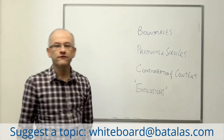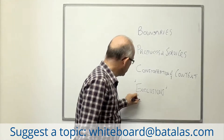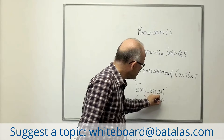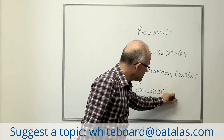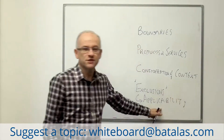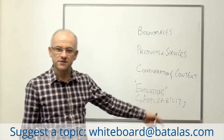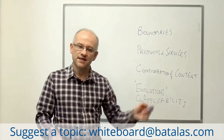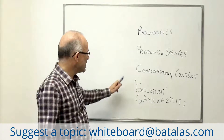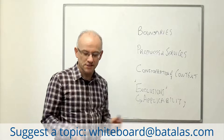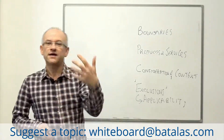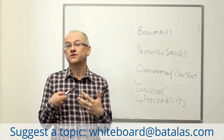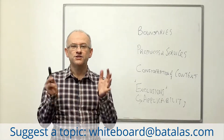The final thing to consider is whether there are any exclusions. We now tend to use the word 'applicability' instead. Interestingly, ISO 27001 has been using this word for a few years and ISO 9001 now uses it too. What is applicable to the system and what isn't must be stated in the scope. It's about being transparent with customers and potential customers.